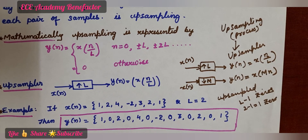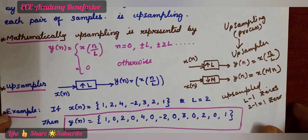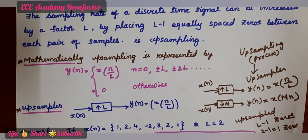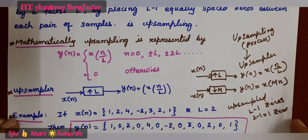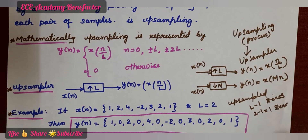Upsamplers and downsamplers are time variant systems. We have seen two processes — upsampling and downsampling. Upsampling means the input signal x of n is increased by a factor of capital L to get y of n, written as x of n over L. Downsampling equation is x of M dot n. In downsampling we remove M minus 1 samples; in upsampling we insert L minus 1 zeros in the given input signal to get y of n. I hope you have understood the class. If you have any queries you can post in the comment section. Thank you, good luck students.